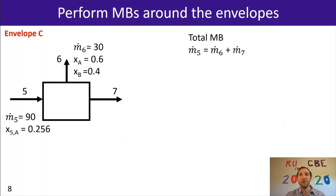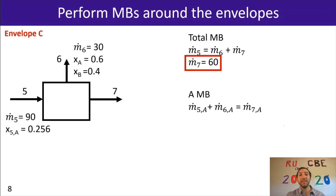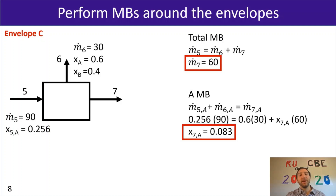For envelope C, we do a total material balance: ṁ₅ = ṁ₆ + ṁ₇, finding ṁ₇ = 60 kg/hr. A component A balance gives ṁ₅x₅ₐ + ṁ₆x₆ₐ = ṁ₇x₇ₐ, with six ISVs, four knowns, and zero degrees of freedom. Substituting all known values, x₇ₐ = 0.083. It won't necessarily be the case that you start with the leftmost envelope — you may need to work backwards or start in the middle, depending on the information given.